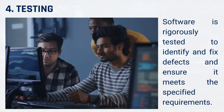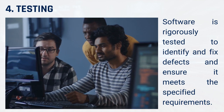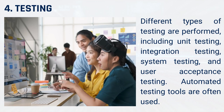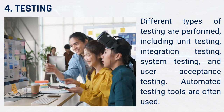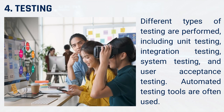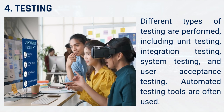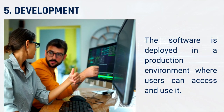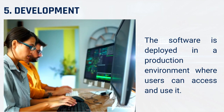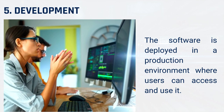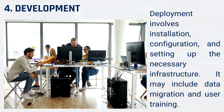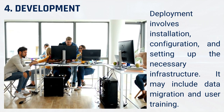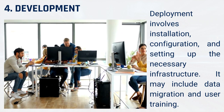4. Testing. Software is rigorously tested to identify and fix defects and ensure it meets the specified requirements. Different types of testing are performed, including unit testing, integration testing, system testing, and user acceptance testing. Automated testing tools are often used. 5. Deployment. The software is deployed in a production environment where users can access and use it. Deployment involves installation, configuration, and setting up the necessary infrastructure. It may include data migration and user training.